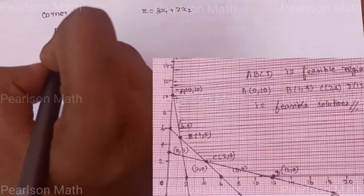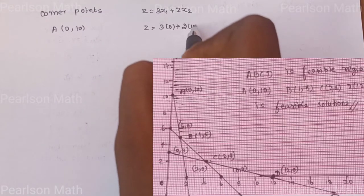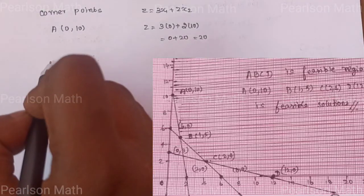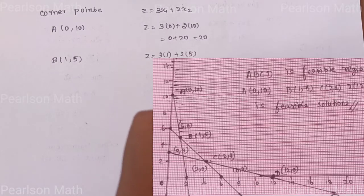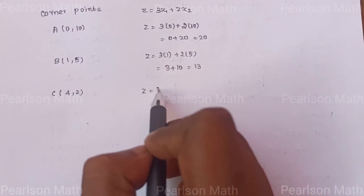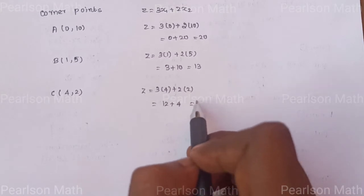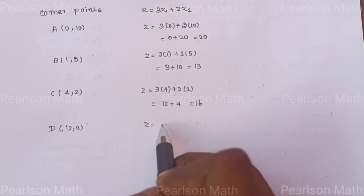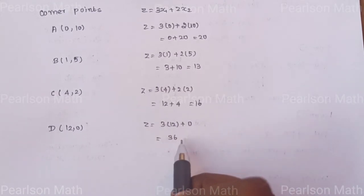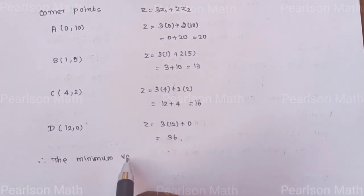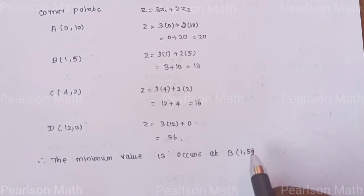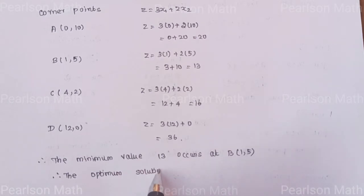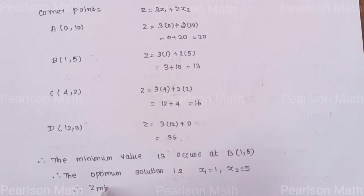Now find the Z value at each corner point. At A (0, 10): Z = 3(0) + 2(10) = 20. At B (1, 5): Z = 3(1) + 2(5) = 3 + 10 = 13. At C (4, 2): Z = 3(4) + 2(2) = 12 + 4 = 16. At D (12, 0): Z = 3(12) + 2(0) = 36. For minimization, we look for the smallest value. The minimum value is 13, which occurs at point B (1, 5). Therefore, the optimum solution is x1 equal to 1, x2 equal to 5, and Z minimum equal to 13.